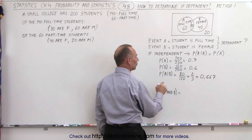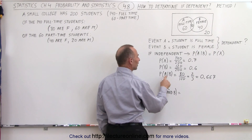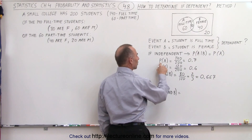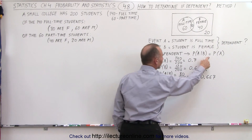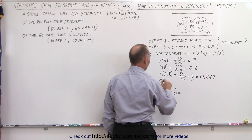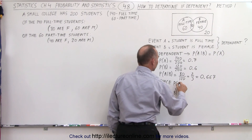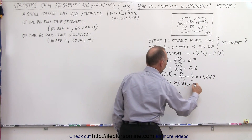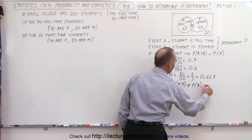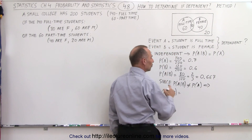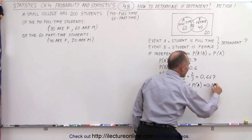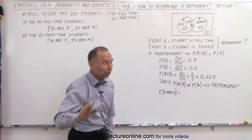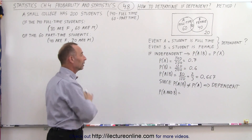You can clearly see that the probability that A will occur given that B has occurred is not the same as the probability of A. Since they are not equal, we can conclude that these must be dependent events. Dependent means that the outcome of one will affect the outcome of the other.